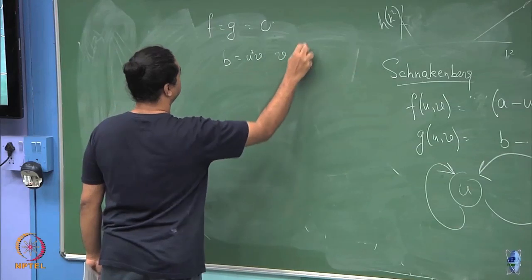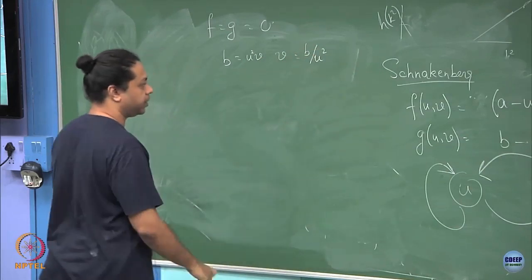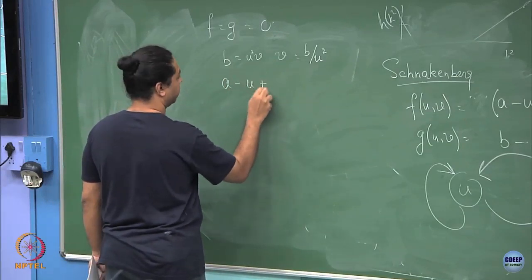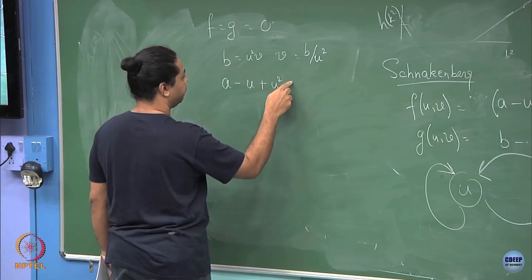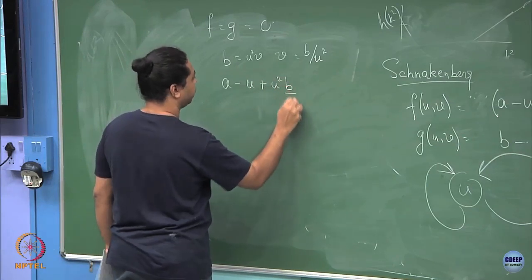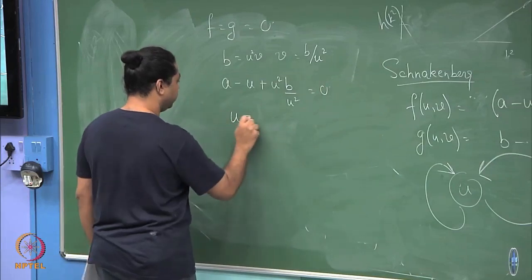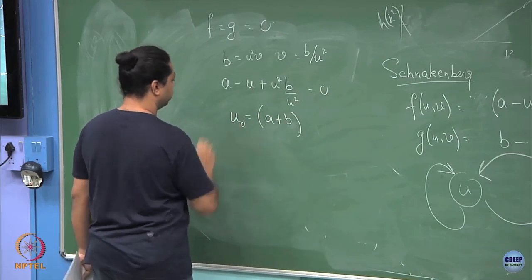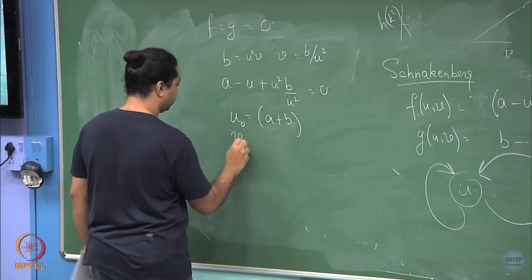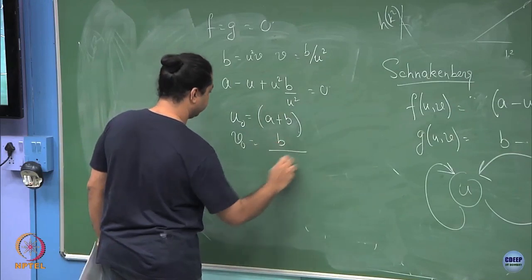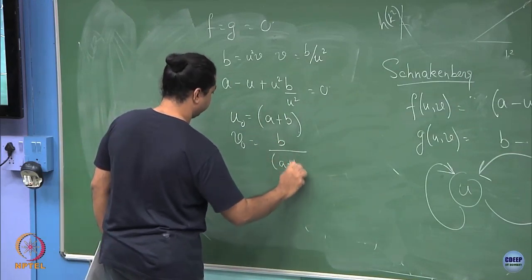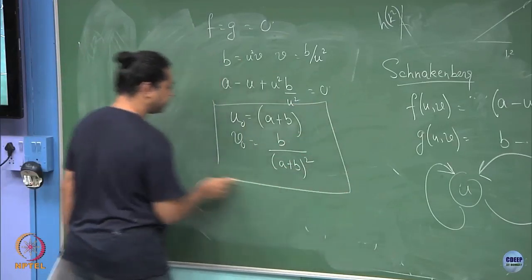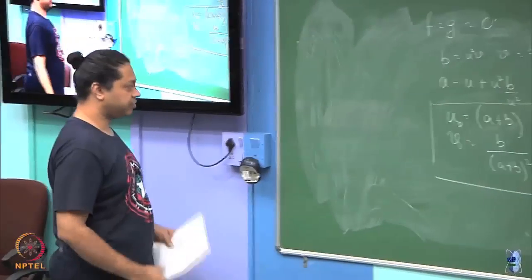b is equal to b by u square and a minus u plus u square v equal to 0, which means u is equal to a plus b, let me say u naught, and v naught then is b by u square, so b by (a plus b) whole square. Given the Schnakenberg kinetics, this is my homogeneous steady state in the absence of diffusion.